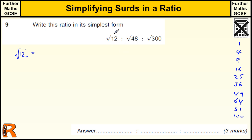So what square number goes into 12? Well, 4 does, 3 times. So the square root of 12 is the square root of 4 times 3. If we separate those out, we get the square root of 4 times the square root of 3, which is 2√3. Now, if all of these are in terms of root 3, we can just cancel root 3 and get the answer.